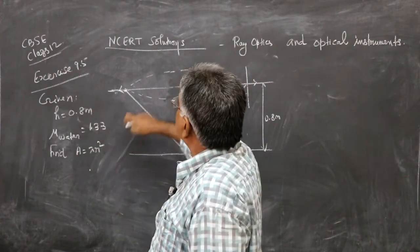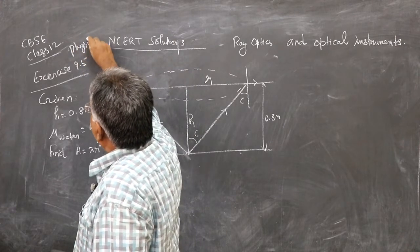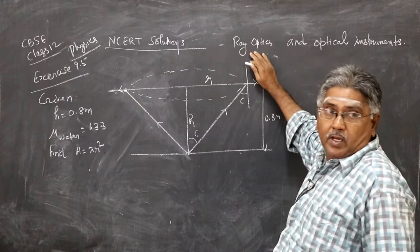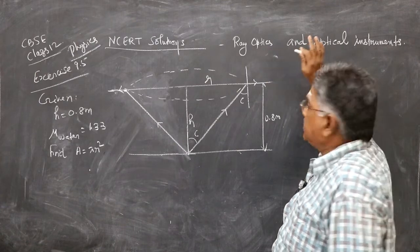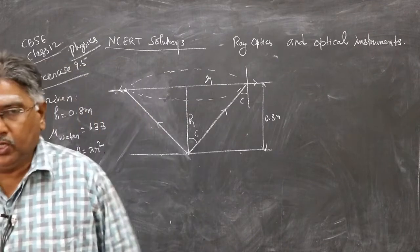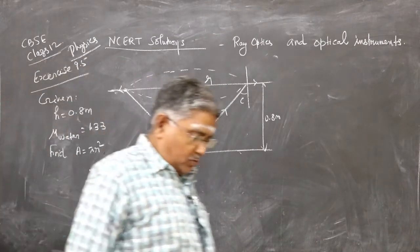CBSE Class 12 Physics, NCERT solutions in the chapter Ray Optics and Optical Instruments. This is Exercise 9.5. We see how to solve this one. First, I will read this question.